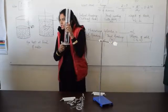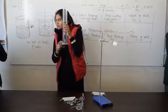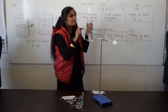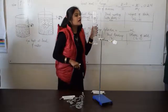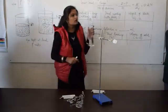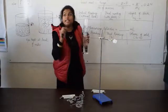Right now the least count of this measuring cylinder is, can you see? What is the least count? 50 upon number of divisions. How many divisions? Ten. So it is 5 ml.